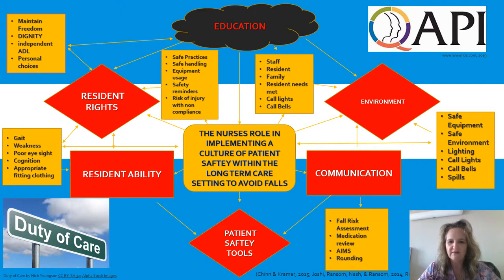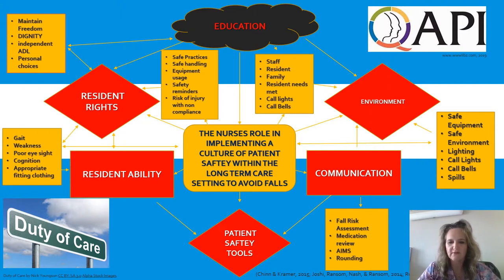The environment is huge. You need to make sure there's appropriate lighting and that they have everything they need in front of them. You need safety equipment and call bells, and you need to make sure there are no spills so that they will not have a fall. Not having a call bell in place will cause someone to get up and move away from the bed independently without following their care plan or getting assistance, and it's going to cause them to fall.